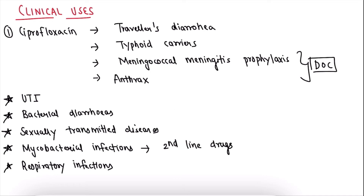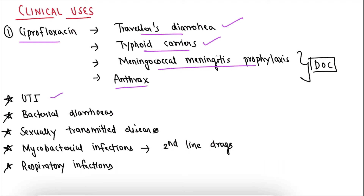For clinical uses, taking ciprofloxacin as an example: it is used in traveler's diarrhea, typhoid carriers, meningococcal meningitis prophylaxis, and anthrax treatment and prophylaxis — ciprofloxacin is the drug of choice for these. Fluoroquinolones are also used in urinary tract infections, bacterial diarrhea caused by Shigella and Salmonella, sexually transmitted diseases, and mycobacterial infections as second-line drugs.